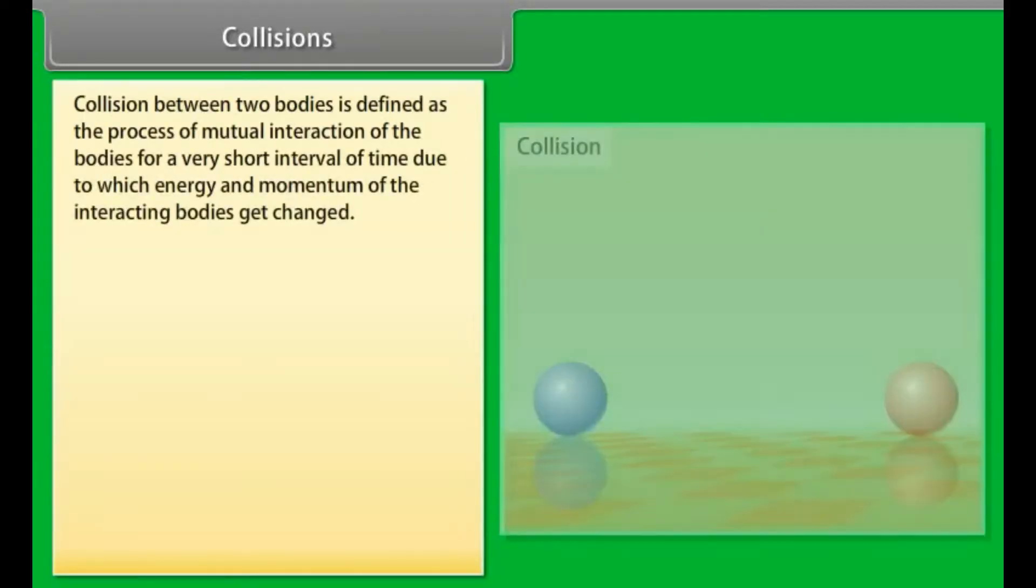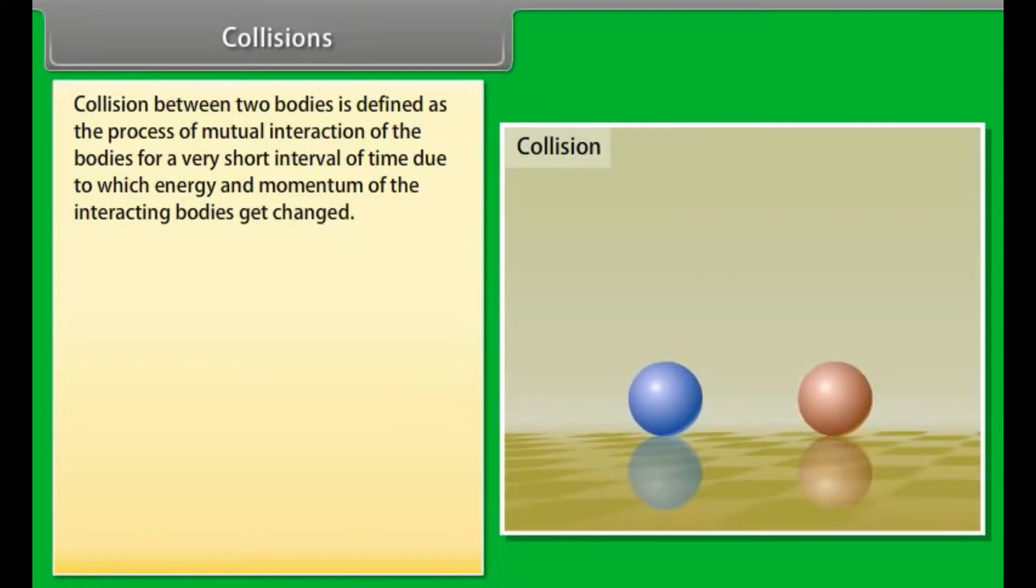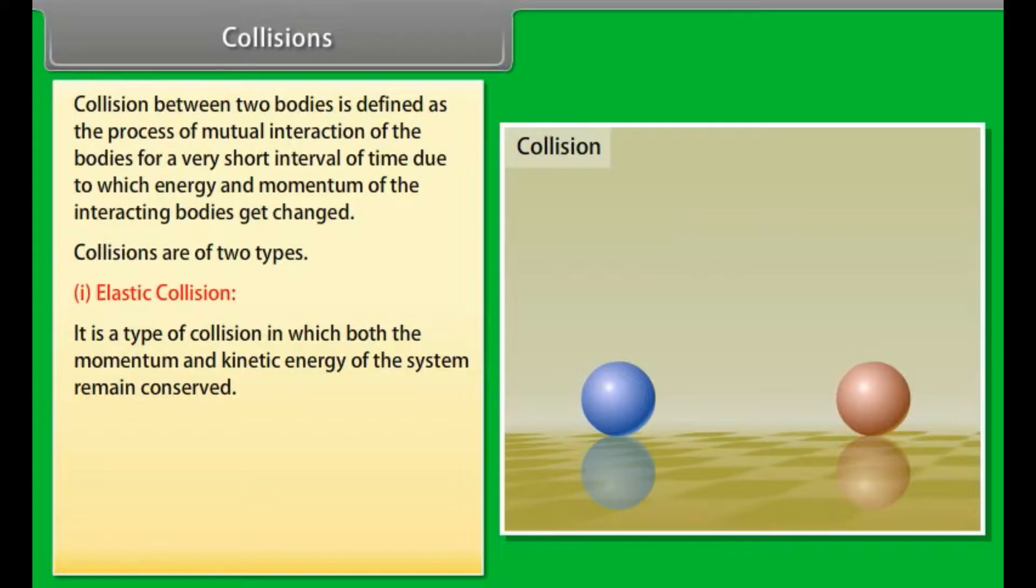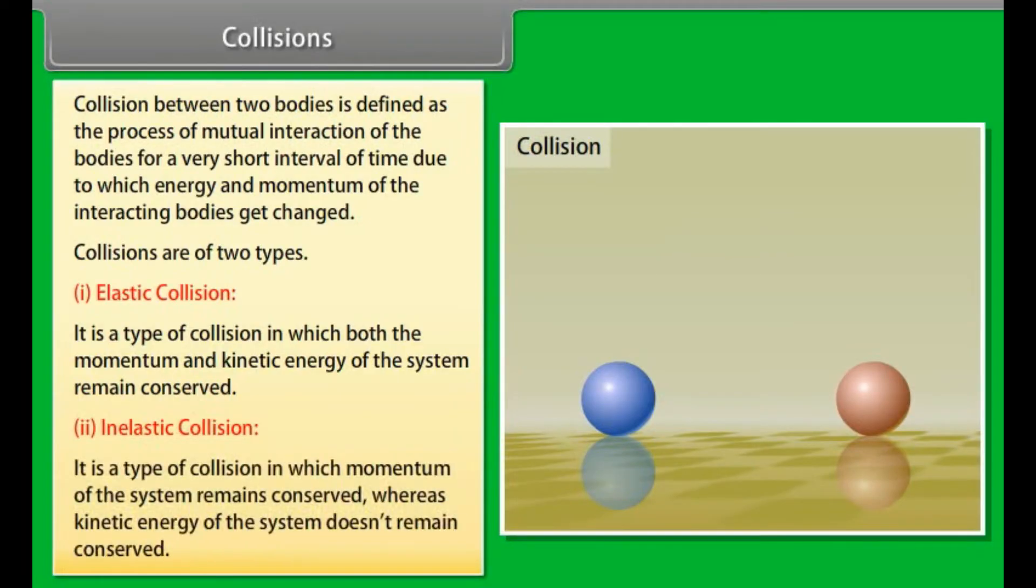Collisions. Collision between two bodies is defined as the process of mutual interaction of the bodies for a very short interval of time due to which energy and momentum of the interacting bodies get changed. Collisions are of two types. Number 1, elastic collision: it is a type of collision in which both the momentum and kinetic energy of the system remains conserved. Number 2, inelastic collision: it is a type of collision in which momentum of the system remains conserved, whereas kinetic energy of the system doesn't remain conserved.